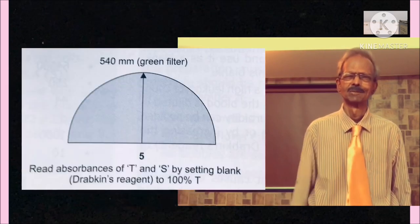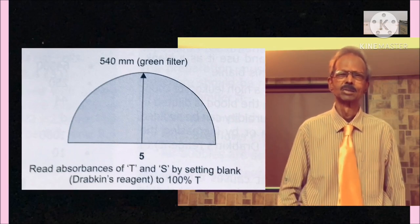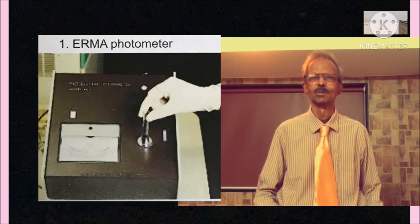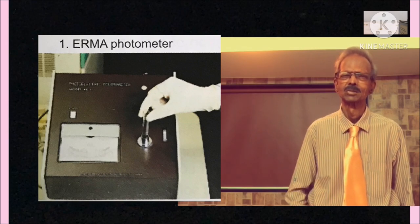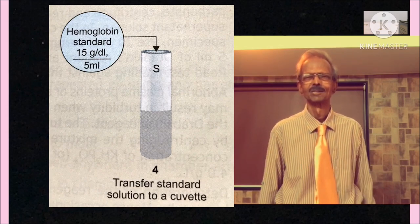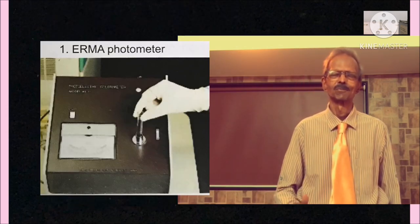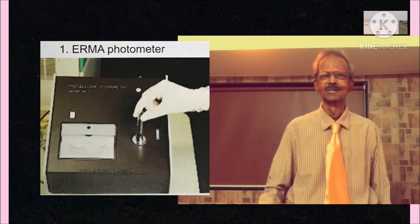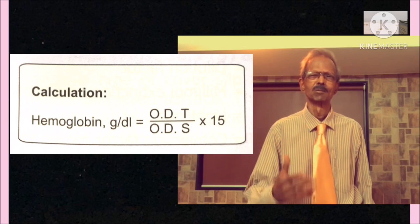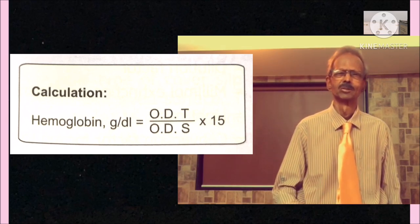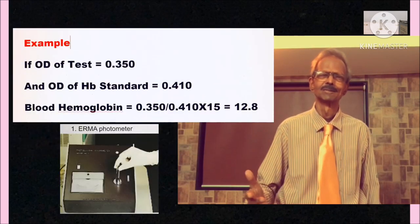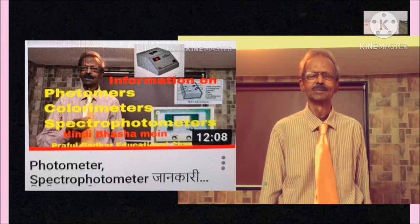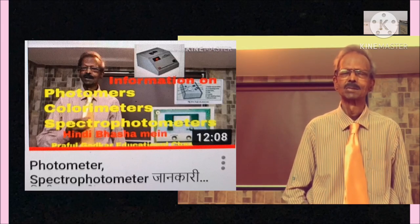Read optical density of this mixture by placing it in a cuvette and using green filter of 540 nanometer or at 520 nanometer. Next, transfer hemoglobin standard of 15 gram in a cuvette and read optical density same as you have done in the case of the test. Use this formula to calculate the blood hemoglobin value as shown on the left hand side. And kindly watch our videos on photometers and spectrophotometers for proper understanding of their use.